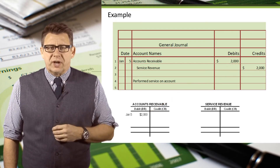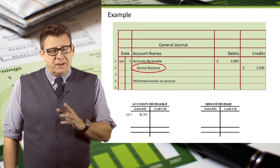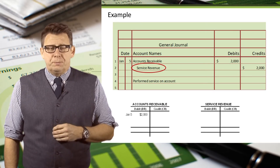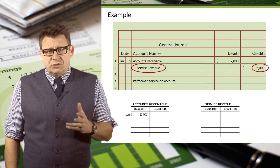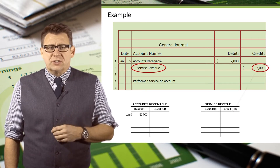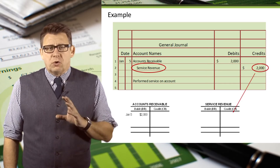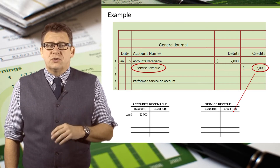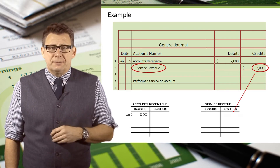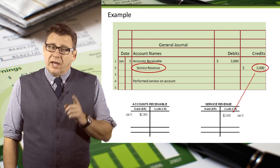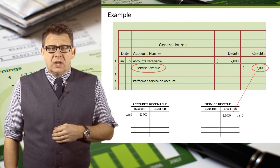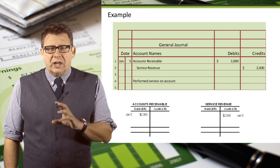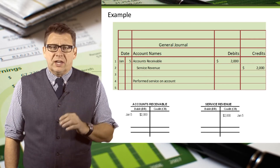Now let's post the credit. Identify the credit account, which in this case is service revenue, and the amount of the credit: $2,000. So in the ledger for service revenue, we will record or post $2,000 to the credit side — like this. And don't forget the date. So now you can see that the amounts from the journal have been posted in the ledger.